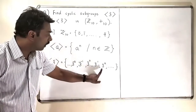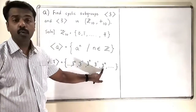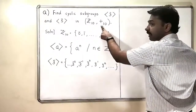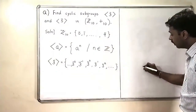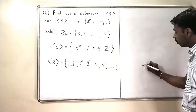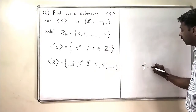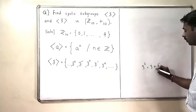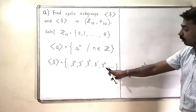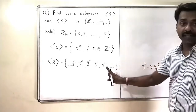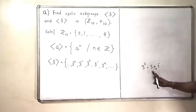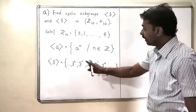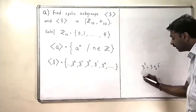Now what is the meaning of 3̄ raised to 2? We know that the operation is modulo 10, so 3̄ raised to 2 means 3̄ plus 3̄ modulo 10. So 3̄ squared is not 9̄ — 3̄ squared is 3̄ plus 3̄.